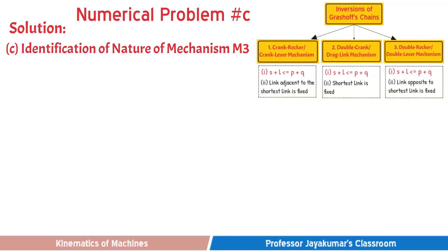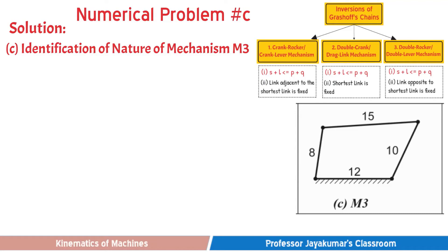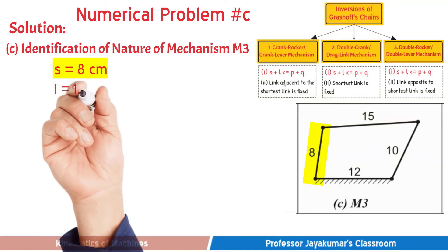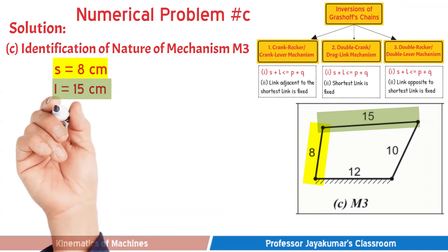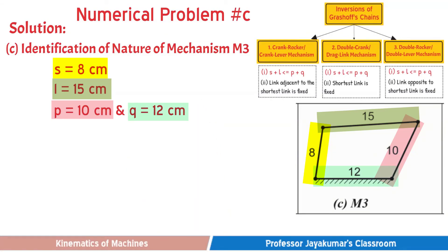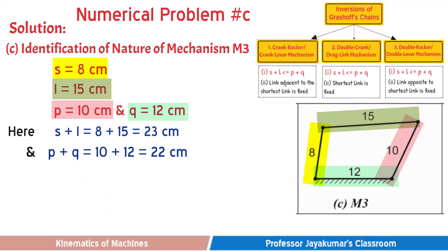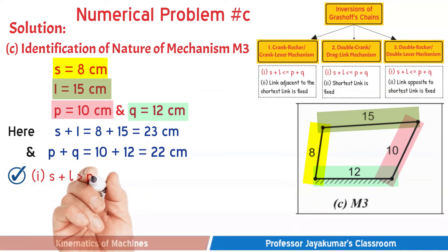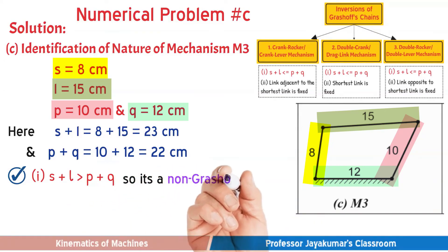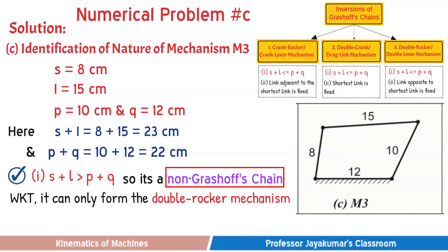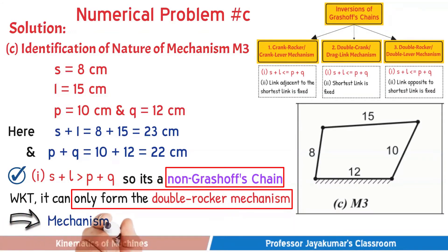Now let us consider Mechanism M3. The shortest link S equals 8 cm, the longest link L equals 15 cm, and the other two links are 10 and 12 cm. S plus L equals 8 plus 15 equals 23 cm, and P plus Q equals 10 plus 12 equals 22 cm. Since S plus L is greater than P plus Q, this is not a Grasov's chain — it is a non-Grasov's chain. For any non-Grasov's chain, it can only form a Double-Rocker Mechanism. Therefore, Mechanism M3 is a Double-Rocker Mechanism, also known as Double-Lever Mechanism.